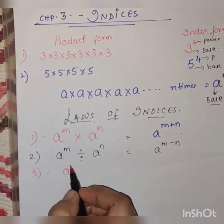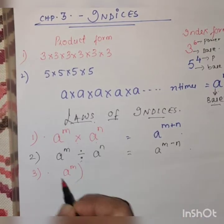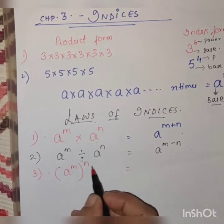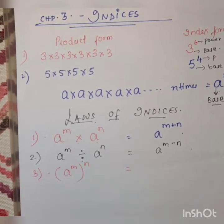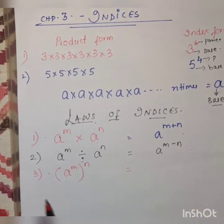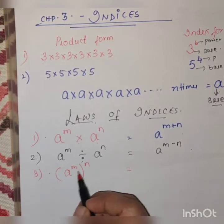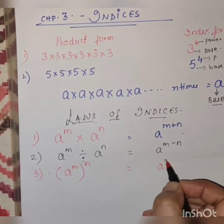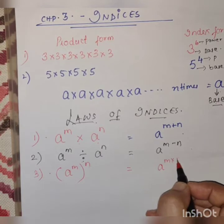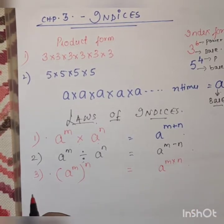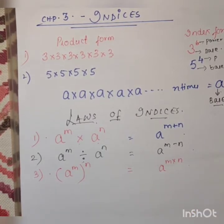Next is A raised to M, bracket whole raised to N. When bracket is there and we open the bracket, we multiply the two powers together. So it becomes A raised to M into N.